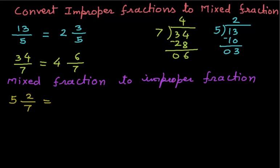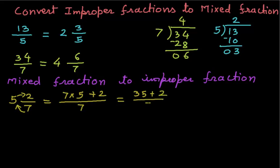First we will multiply these two: 7 times 5, and add 2 to it, keeping the denominator 7 as it is. So it will be 35 plus 2 over 7, which is nothing but 37 over 7, which is an improper fraction.